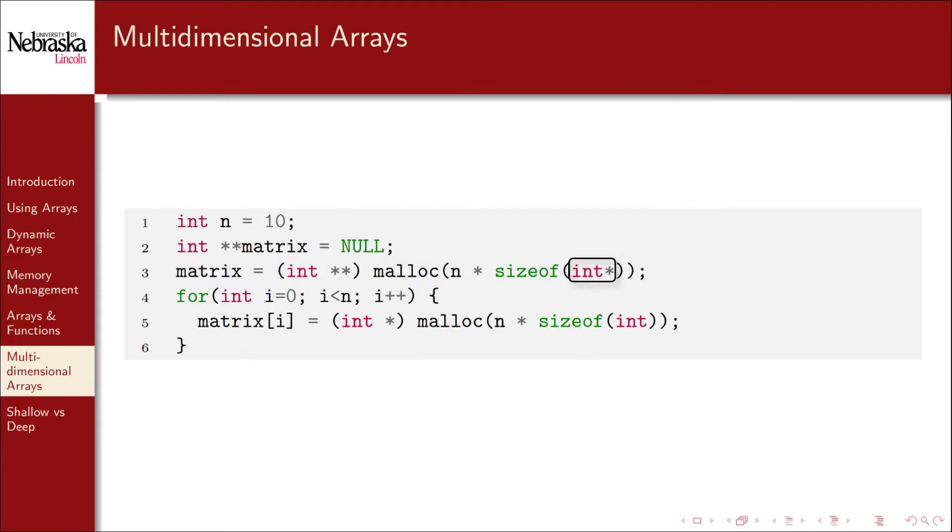It calls malloc and allocates enough bytes for 10 integer pointers. Note that in the sizeof macro, we're using int star to determine how many bytes an integer pointer takes, because it could be and likely is different than a regular integer. In the for loop, each row is set up with a normal call to malloc for an array of 10 integers.